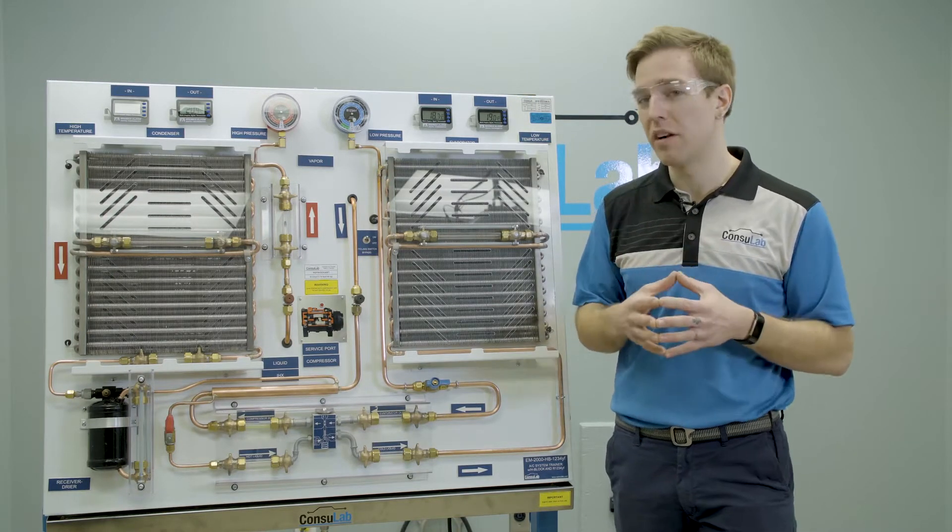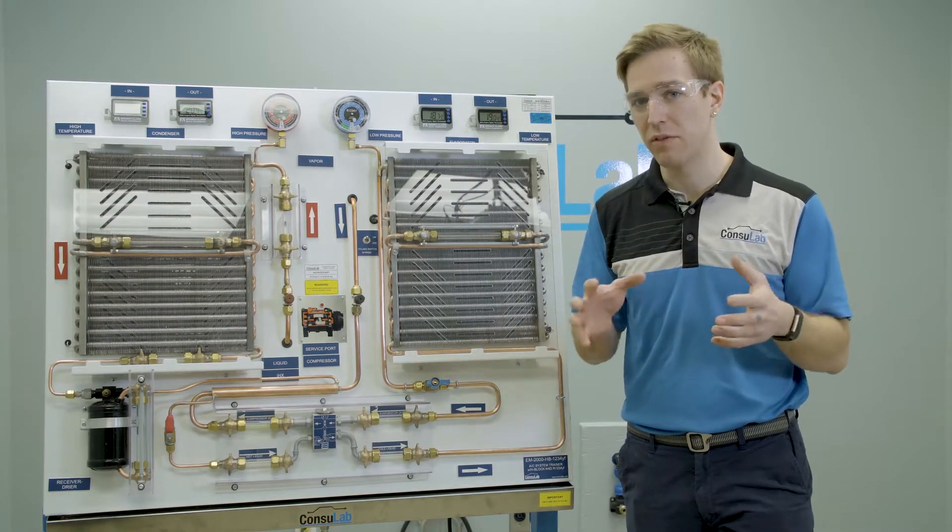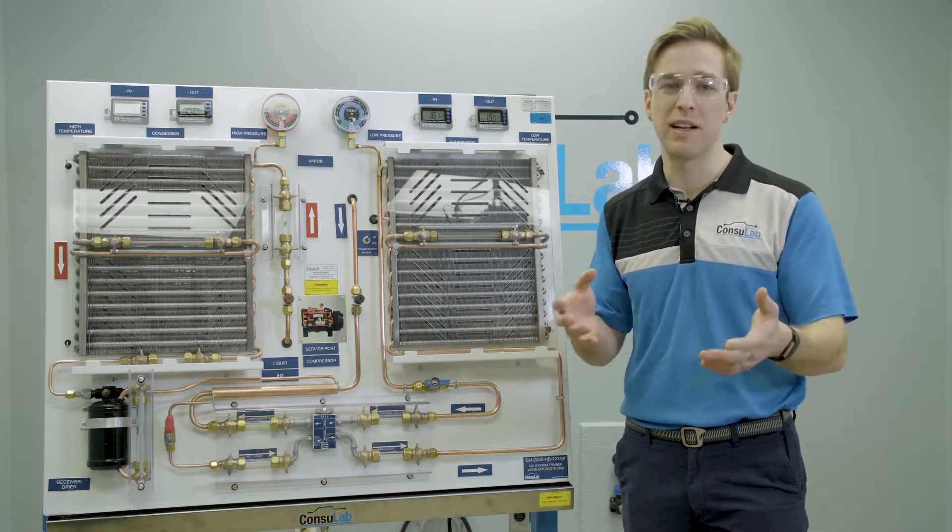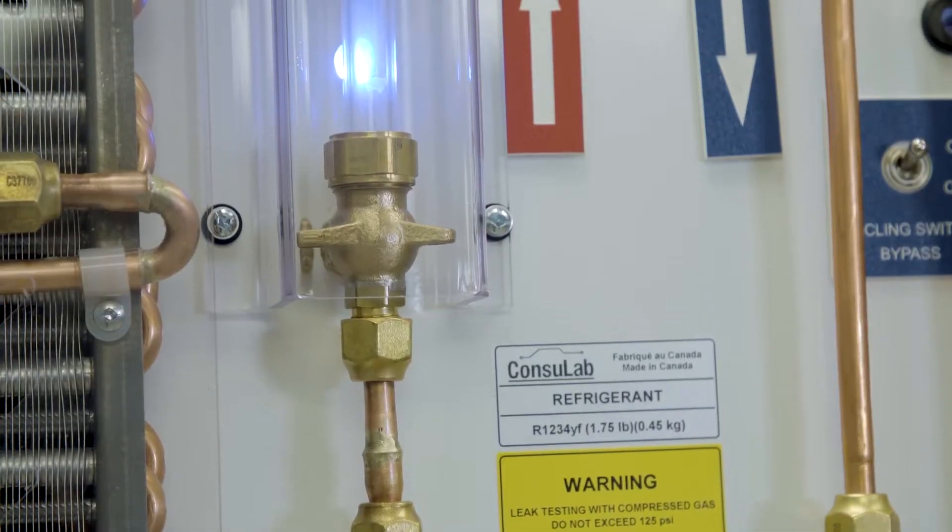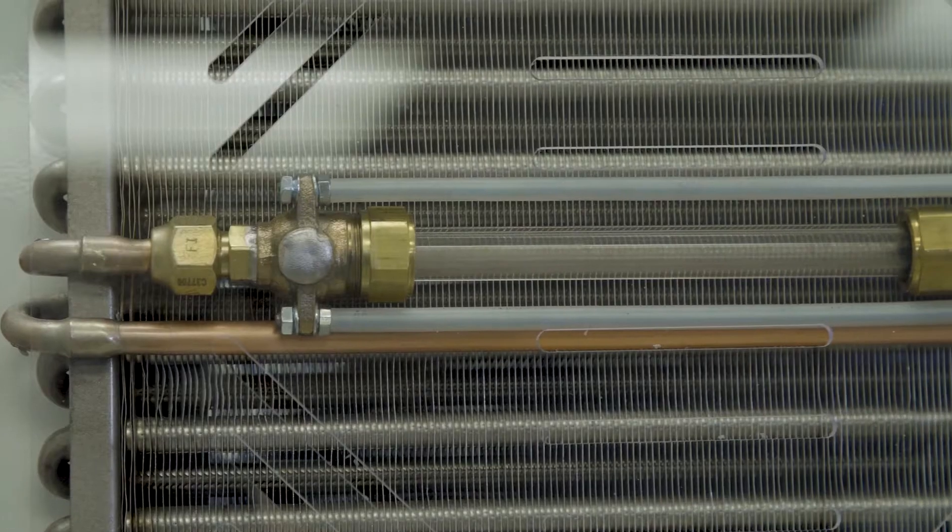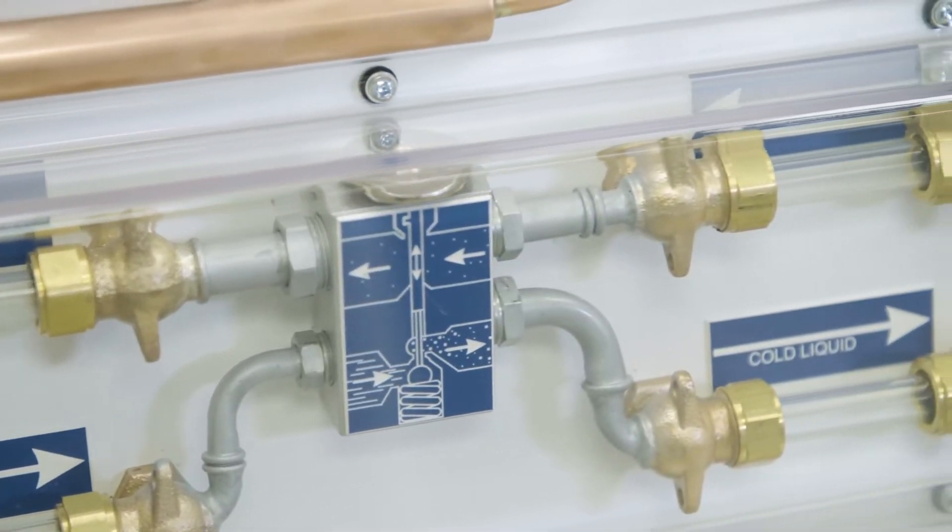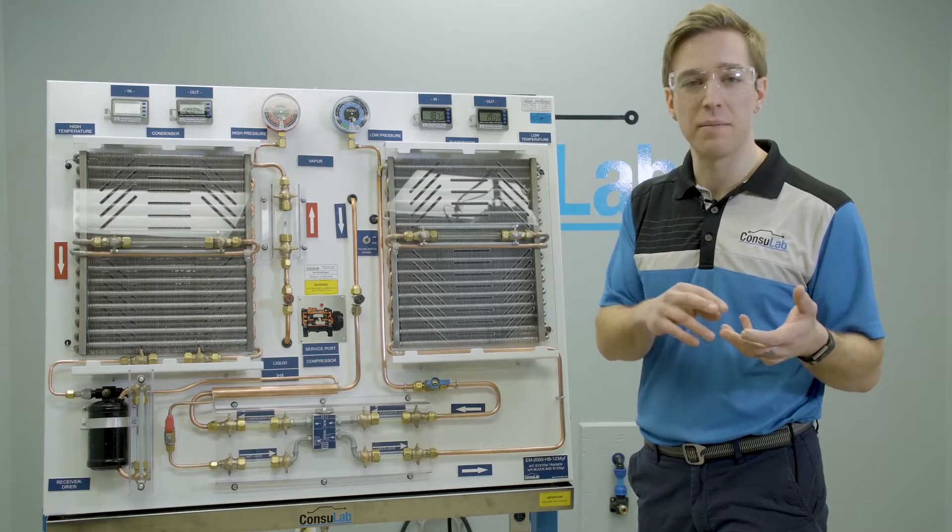Now all of our air conditioning trainers have been developed for teaching and demystifying the principles of thermodynamics that are so difficult to explain in a classroom environment. So we have clear tubes located throughout the system to allow the students to visualize the state of change of the refrigerant from a gas to a liquid and back to a gas again.